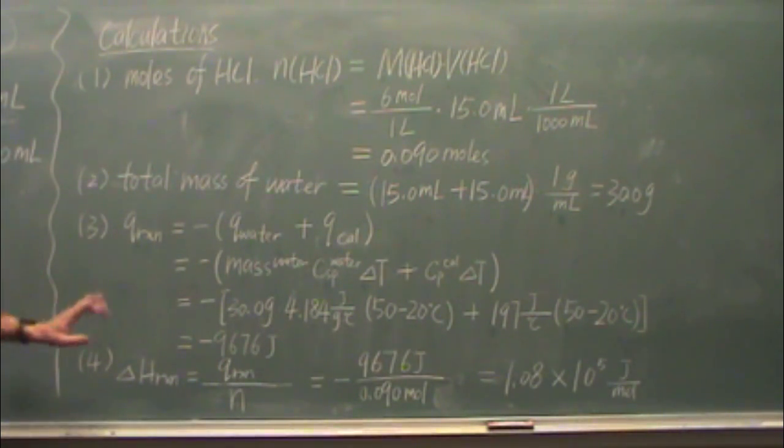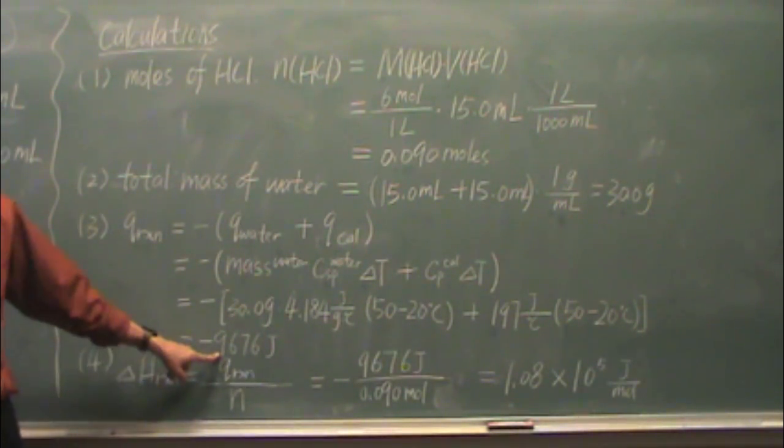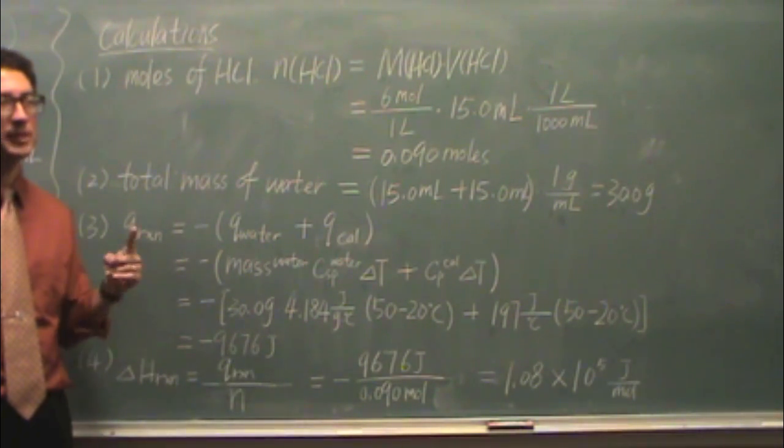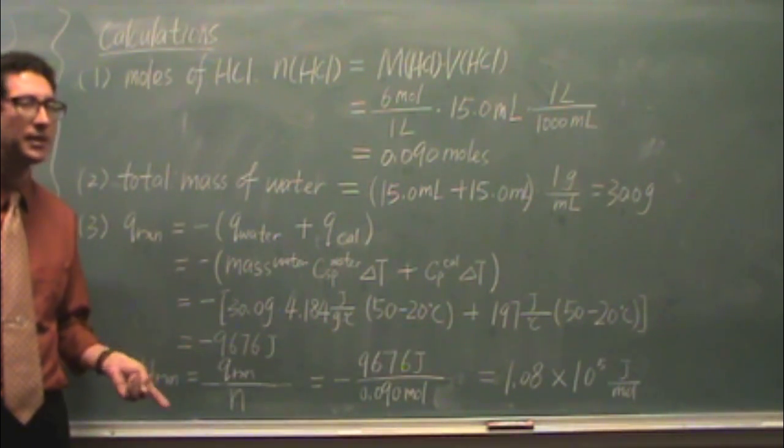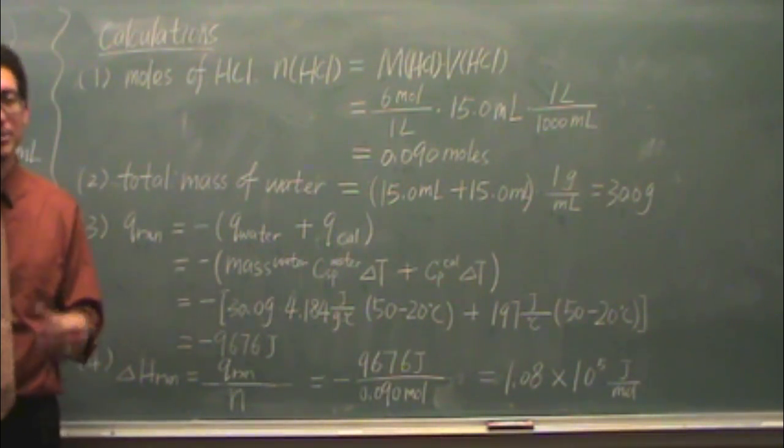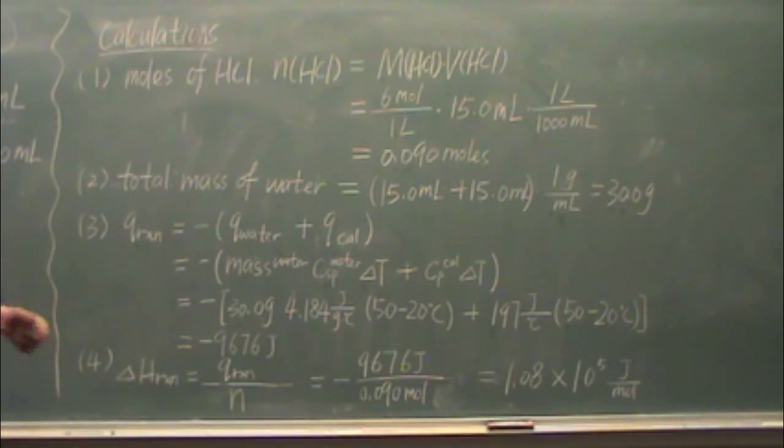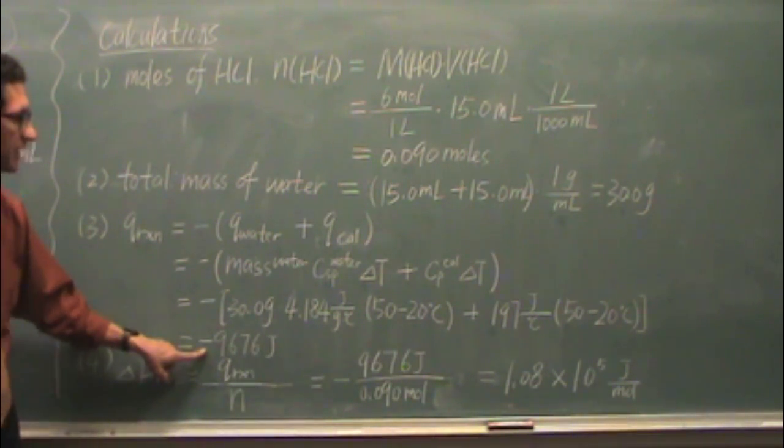And then, that'll give us a negative number here. Negative makes a lot of sense, because negative is exothermic. That means heat is given off, and that's what we expect from part four. So that's good. If you got a positive number there, that's a problem.